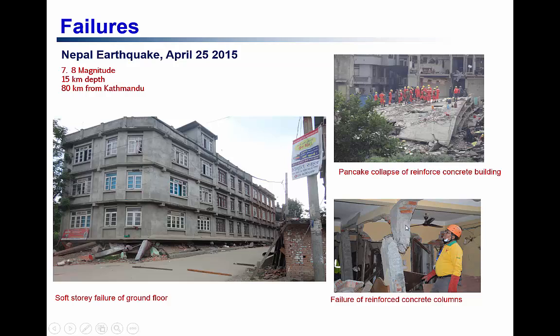The second figure shows a pancake failure of an entire concrete structure. The third shows failure of a concrete column. When designing a concrete building, we do not want concrete columns to fail, but here the column failure has led to critical damage to the whole building. We will discuss what leads to this kind of failure when we cover concrete columns. This is a general overview of concrete and its use as a construction material. In the next videos, we will look at concrete in more detail as a material and then explore how it is used for the construction of structures.